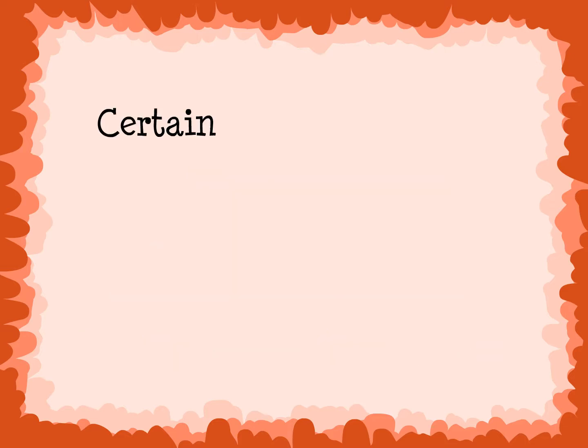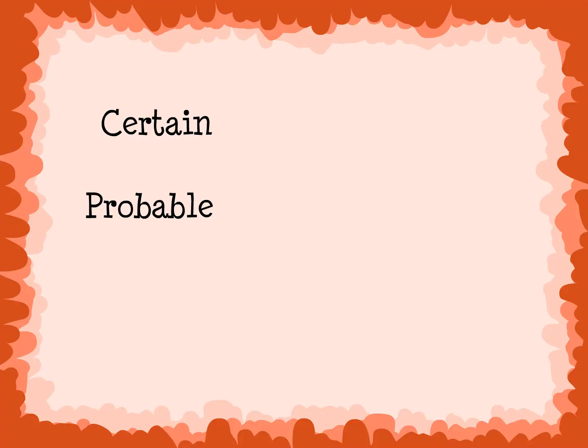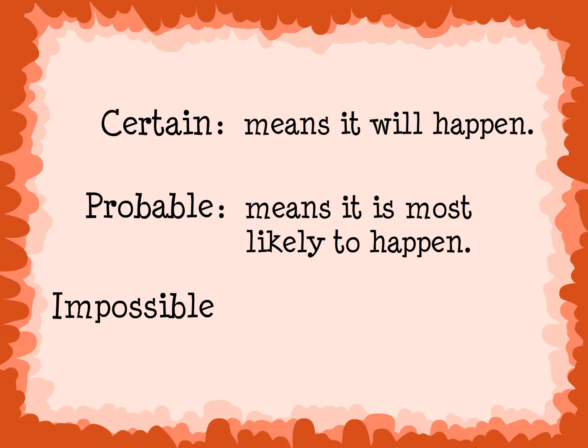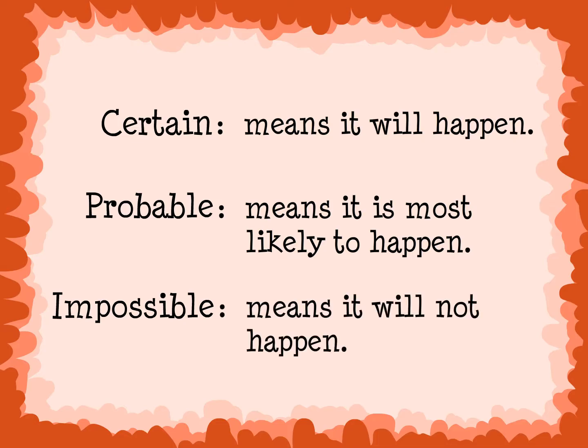We could also predict an outcome to be certain, probable, or impossible. Certain means that it will happen. Probable means that it is most likely to happen. Impossible means that it will not happen.